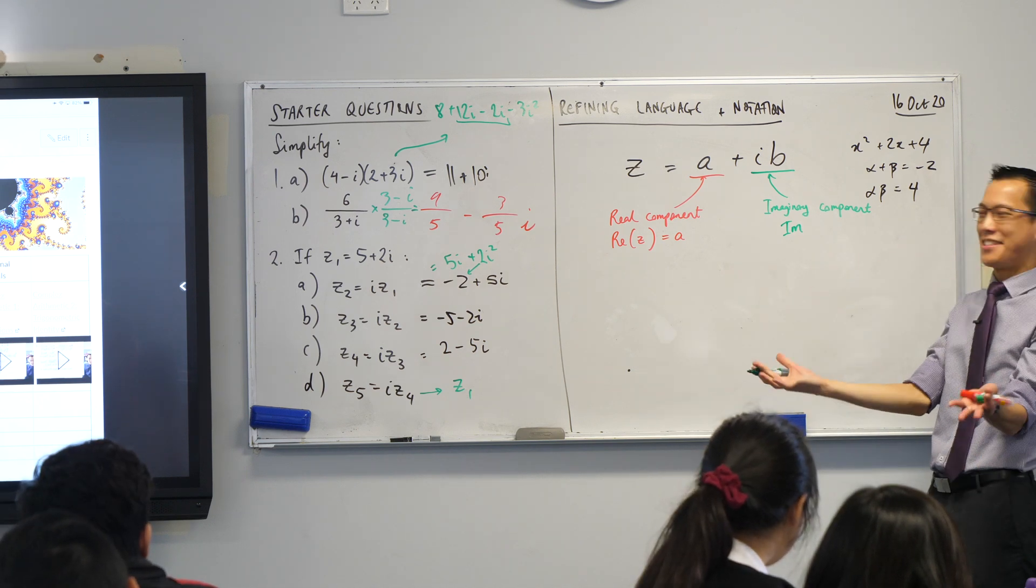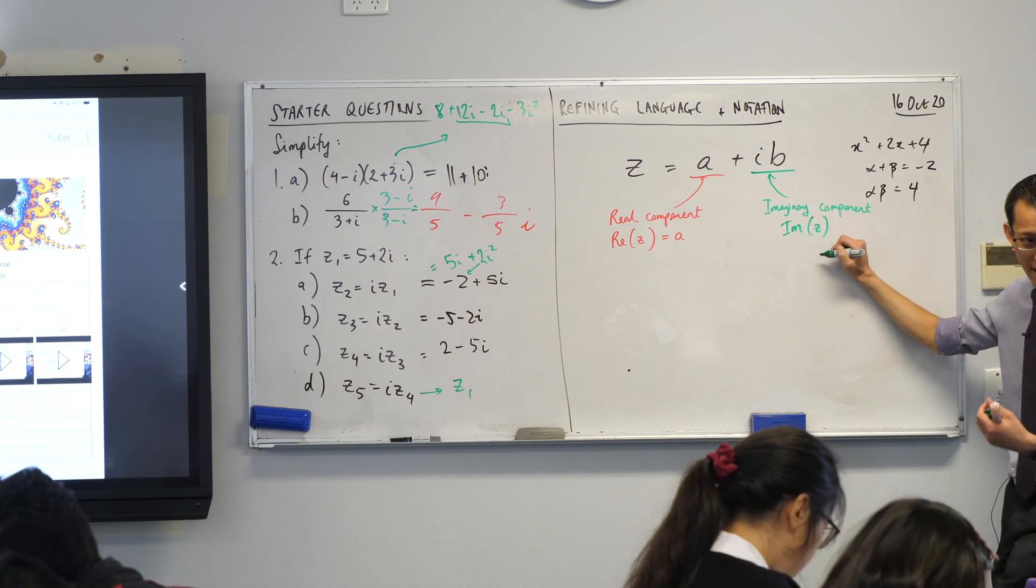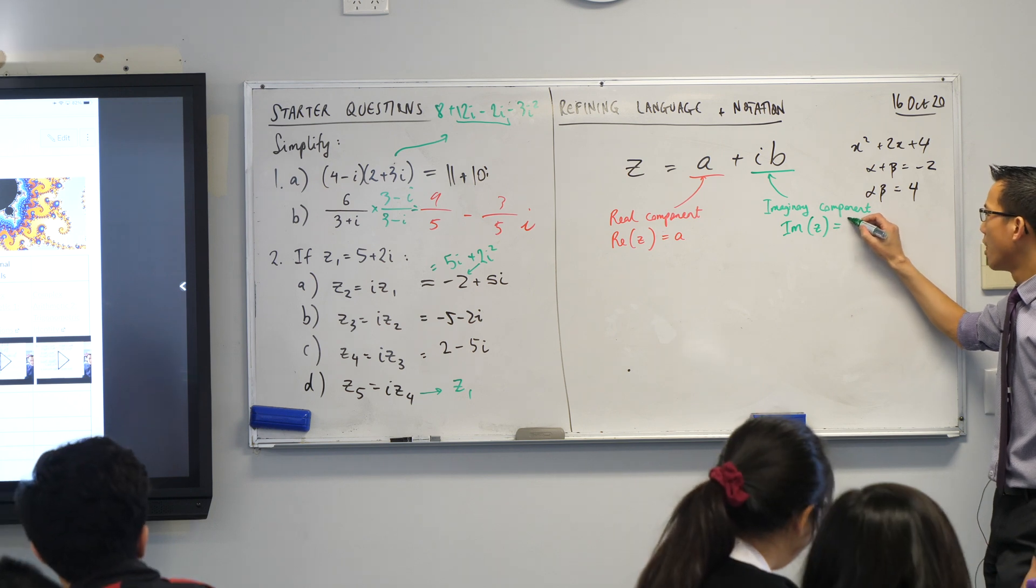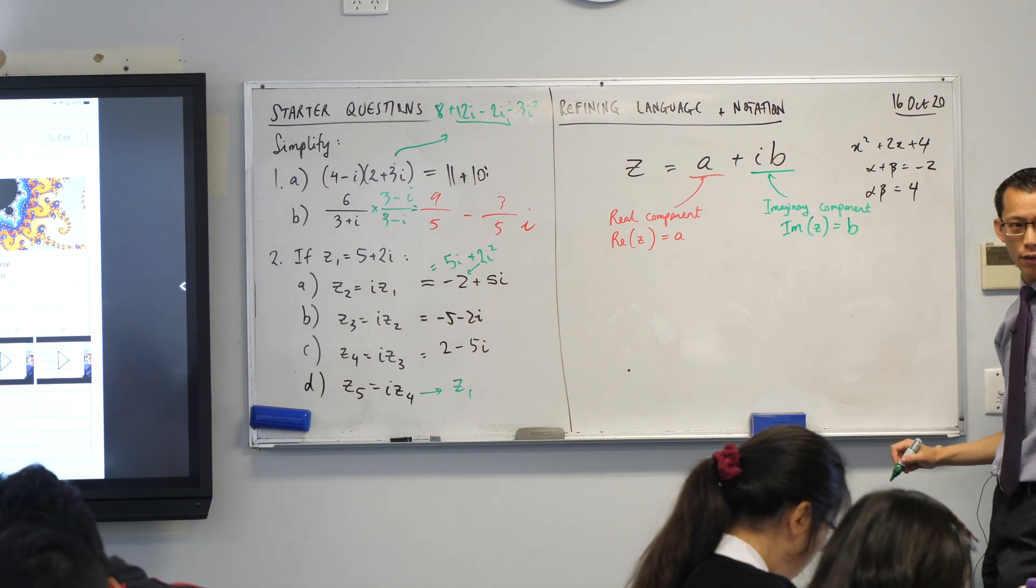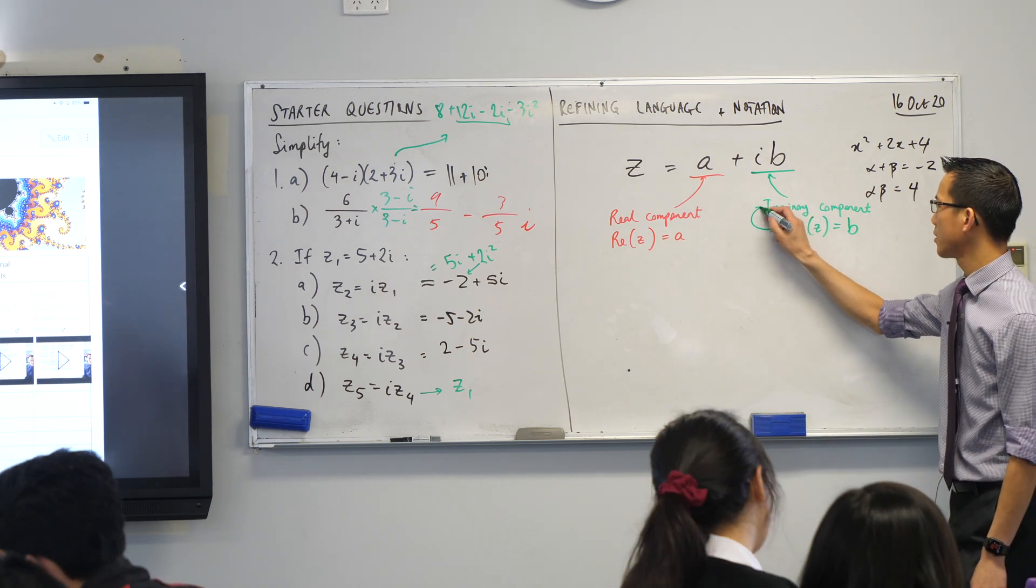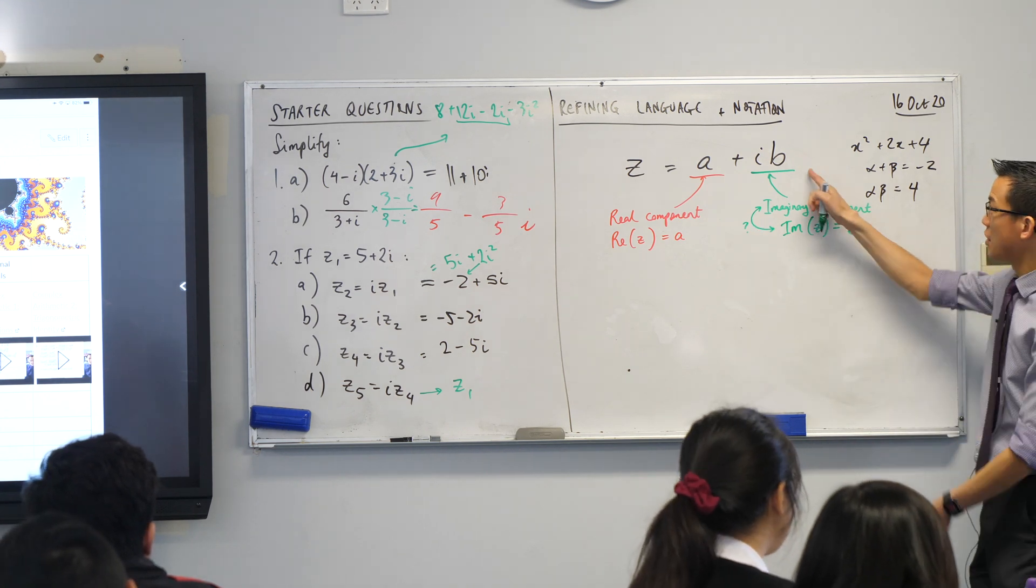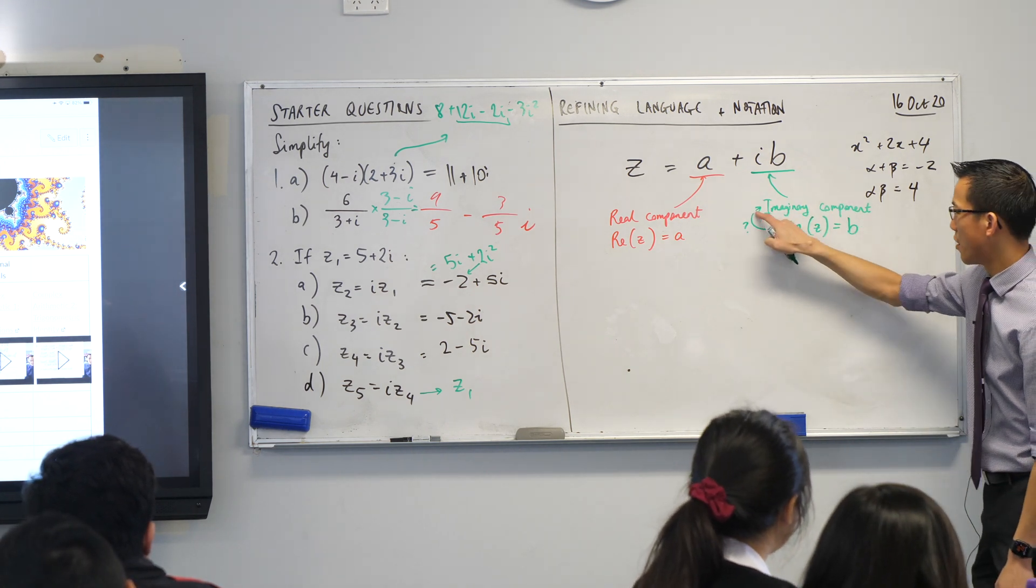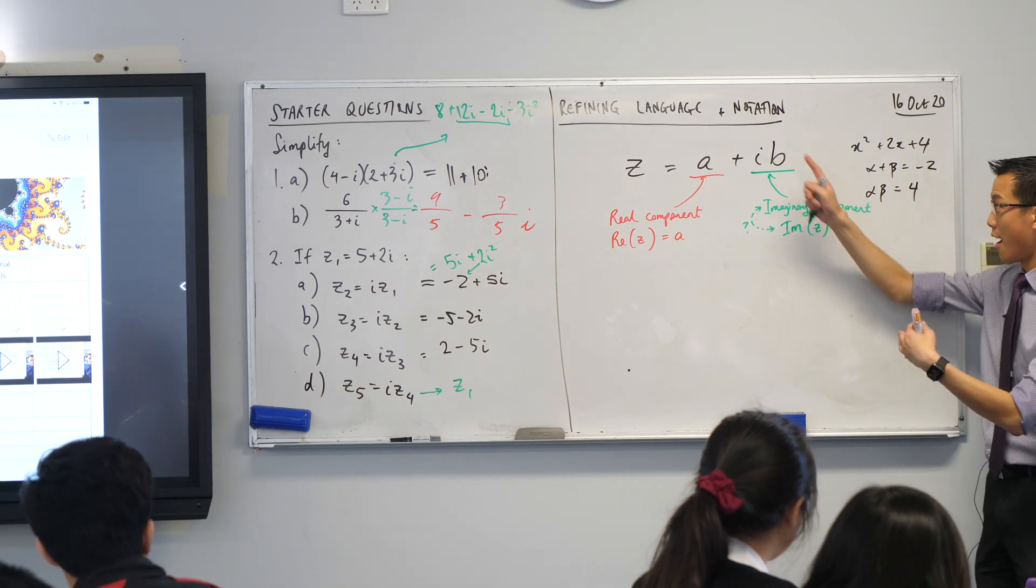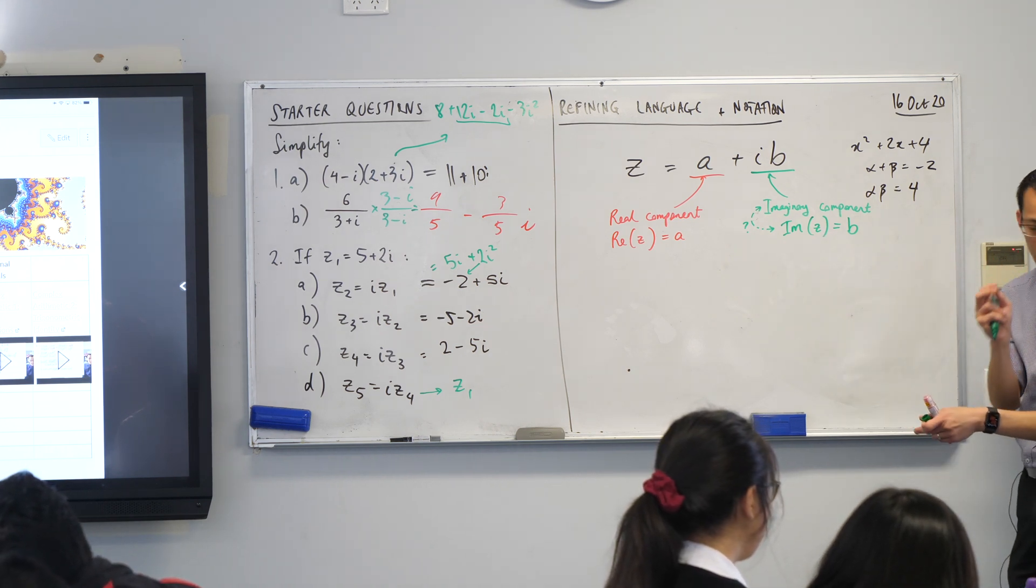When we're looking for the imaginary component of z, this is slightly weird. We actually just mean the coefficient in front of that. So these two things, these two things are slightly different. So we mean the imaginary component is the whole thing. So these here are connected, clearly. The imaginary component is bi, but when I write this, I just mean b. What's that coefficient there?